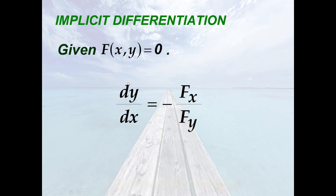We assume that an equation of the form f(x, y) = 0 defines y implicitly as a differentiable function of x. Then the derivative of y with respect to x, denoted as dy/dx, is equal to the negative of the partial of f with respect to x over the partial of f with respect to y.